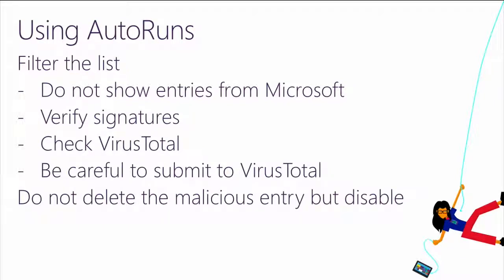Autoruns was easy because you could verify all the files to see if they are valid Microsoft entries or entries from a valid vendor. In this case it was a valid vendor, but VirusTotal was showing it was suspicious software. You can also submit each unknown executable to VirusTotal, but if this is a targeted attack, the attackers may be keeping an eye on VirusTotal — as soon as you submit it, they know you're on their track and might change their tactics.